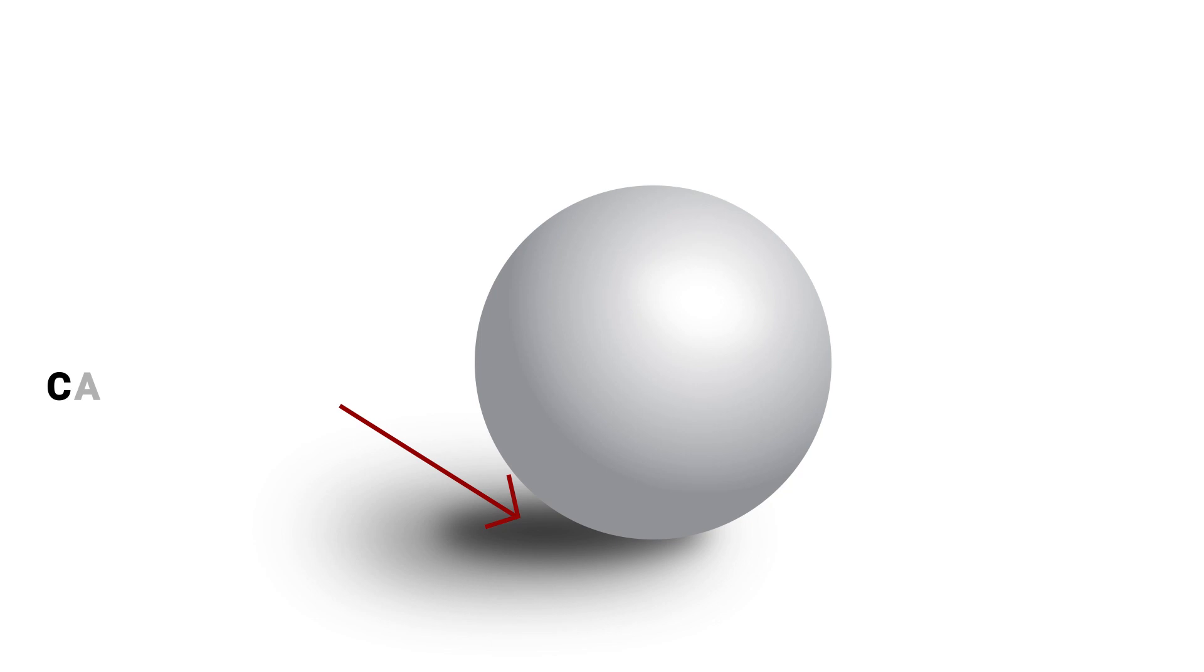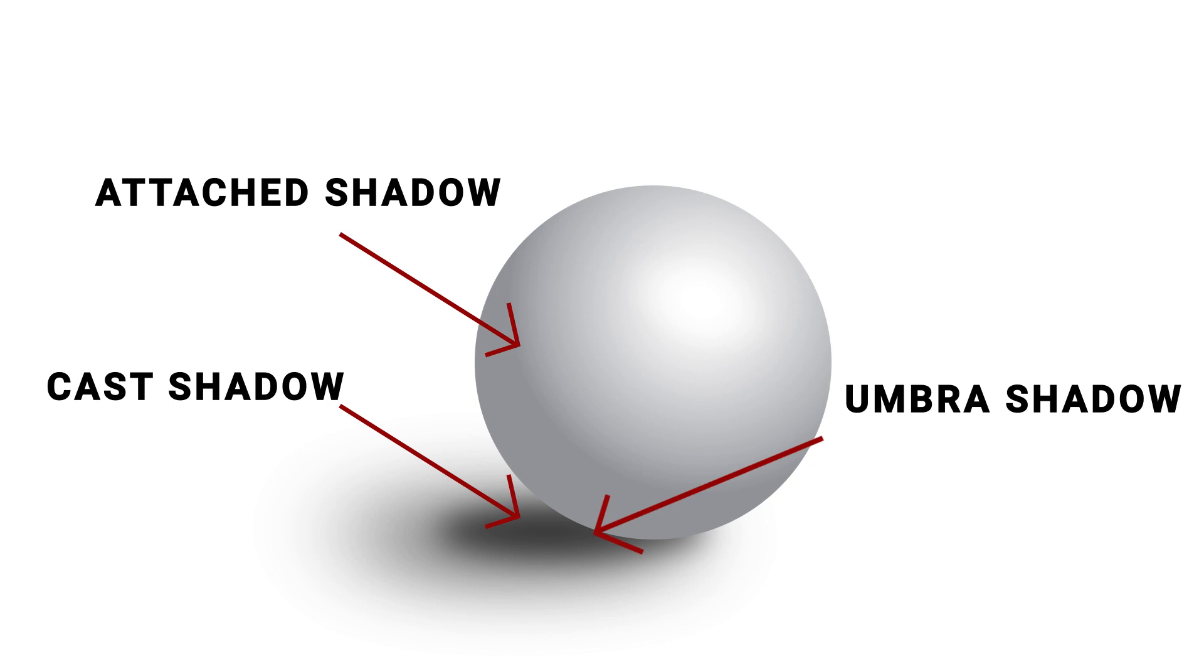Shadows come in different types. A cast shadow is the shadow formed by an object on a surface. An attached shadow is a darkened portion of the thing itself. And an umbra refers to the darkest part of a shadow, while the penumbra is the lighter, surrounding region.